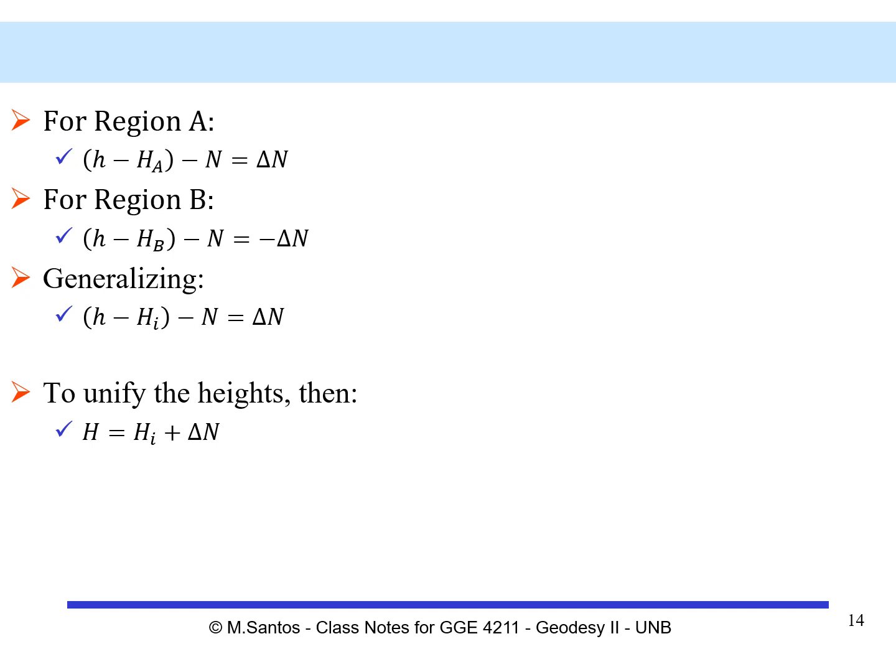We can generalize these expressions by saying that the geodetic height minus the orthometric height of any generic point minus the global geoidal height at that point equals delta N. This delta N becomes the quantity that will bring about the unification of height systems. All we have to do is apply this delta N to the orthometric heights of a particular regional height system to obtain orthometric heights in the global height system.